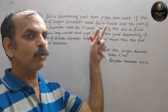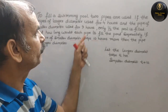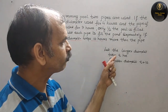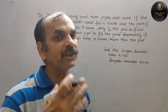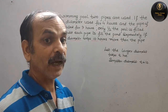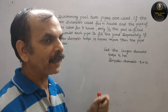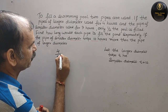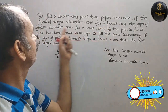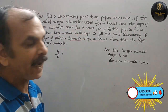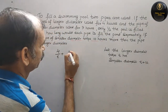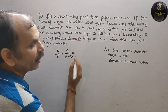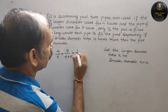अब फिर से हम ऊपर से पढ़ते हैं। उसने कहा है कि larger diameter used for 4 hours, that means 4/t। हम यहाँ पर efficiency of pipes निकाल रहे हैं। तो हमारा equation होगा: 4/t + 9/(t+10), और smaller वाले ने 9 hours किया है, तो 9/(t+10). That is equal to half — 1/2।